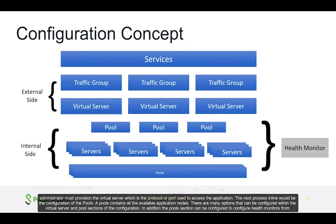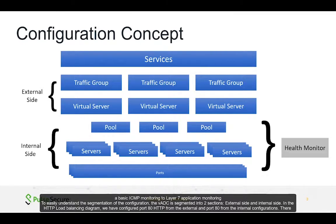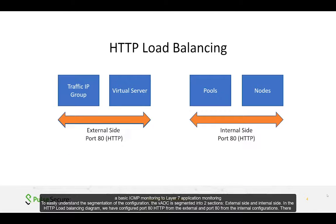The next step in the process is the configuration of the pool. A pool contains all the available application nodes. There are many options that can be configured within the virtual server and pool section, and the pool section can also be configured for health monitors, from basic ICMP monitoring to layer 7 application monitoring. The VADC is segmented into two sections: external side and internal side.